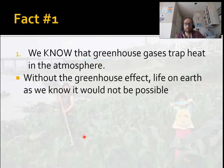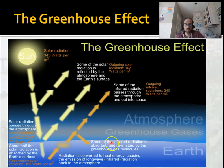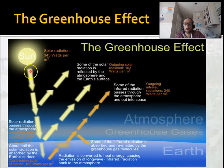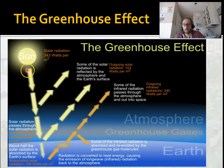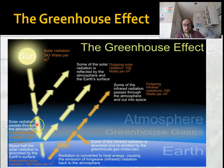Fact number one: we know that greenhouse gases trap heat in the atmosphere, and without them life would not be possible. This is something nobody disputes — no legitimate person disputes the greenhouse effect. The sun emits mostly shortwave radiation — essentially invisible light — and that travels toward the earth. We have our atmosphere here, about 100–200 miles thick, and inside it we have greenhouse gases like carbon dioxide and methane. That shortwave radiation just passes right through the greenhouse gases.